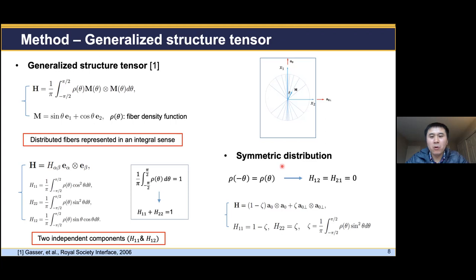For most bio tissues there exists a symmetry axis. With this symmetry condition, rho of negative theta equals rho of theta. Further, we will have H12 equals H21 equals zero. Finally, the generalized structure tensor can be expressed in a simplified form with only one parameter zeta.